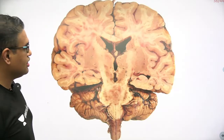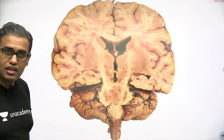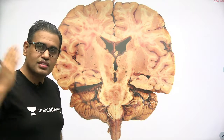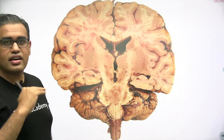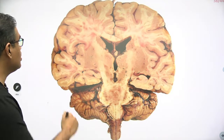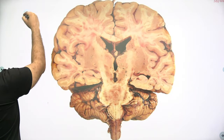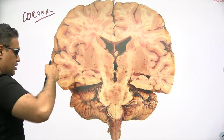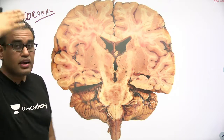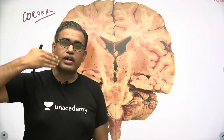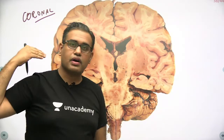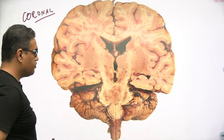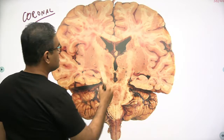Here is an image of the brain. This is neither a sagittal section nor a transverse section — this is a coronal section. A coronal section divides the brain into anterior and posterior parts.